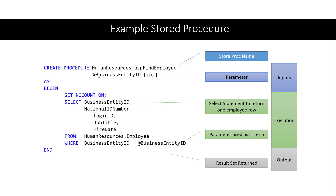We are going to be taking the Business Entity ID, which is a primary key from the Human Resources Employee table, to look up employees. The stored procedure has a name and a parameter. The items shown in green are the items that get executed by the stored procedure. We have a couple of statements being run: SET NOCOUNT ON tells the database not to report how many rows are returned by the query — it's for efficiency purposes — and then we have the meat of our stored procedure, which is the SELECT statement.